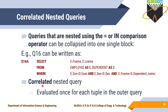Next is correlated nested query. It executes once for each tuple in the outer query. For each tuple in the outer query, the inner query is evaluated. Such types of queries we call correlated nested queries.